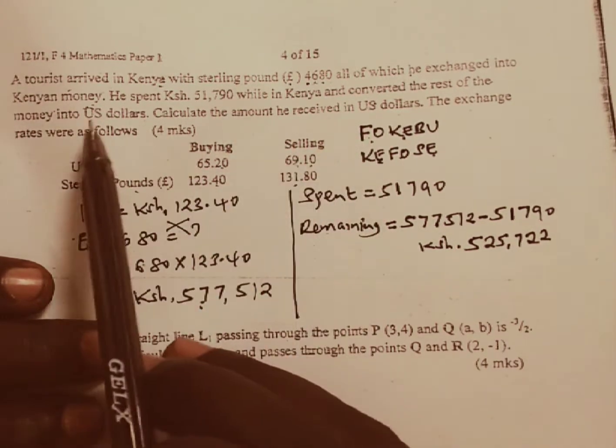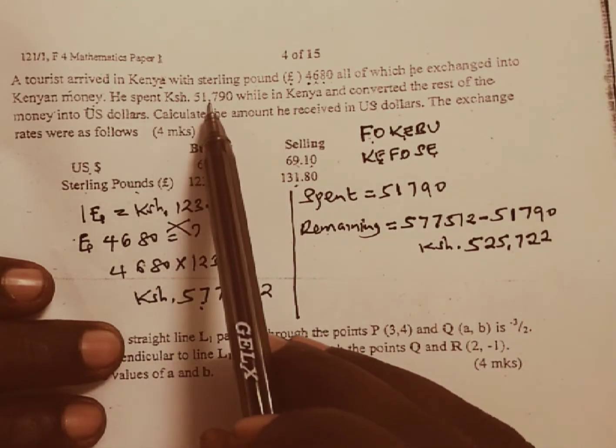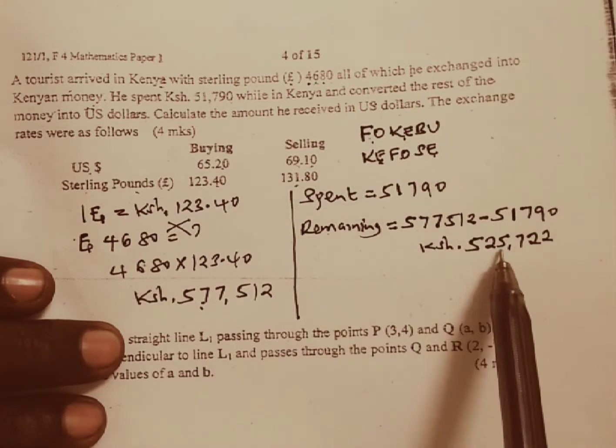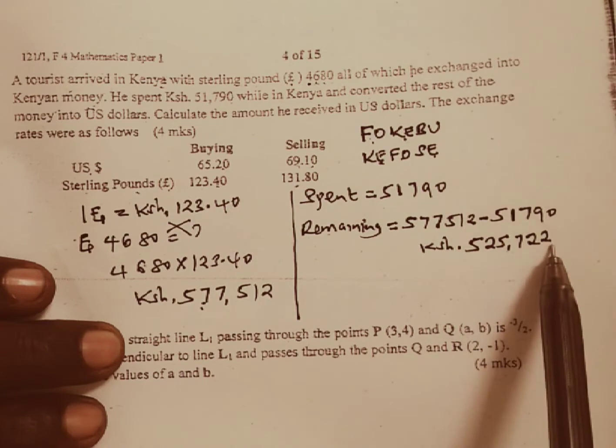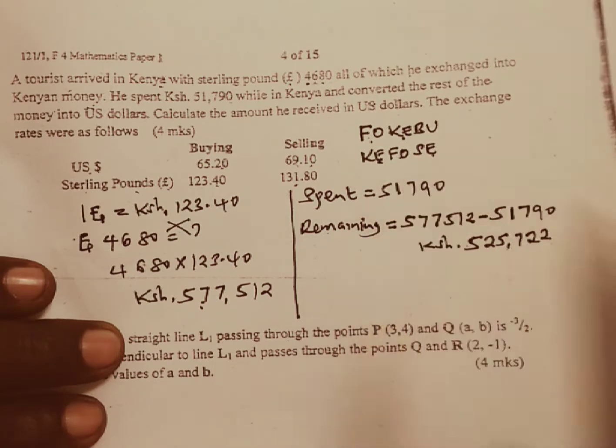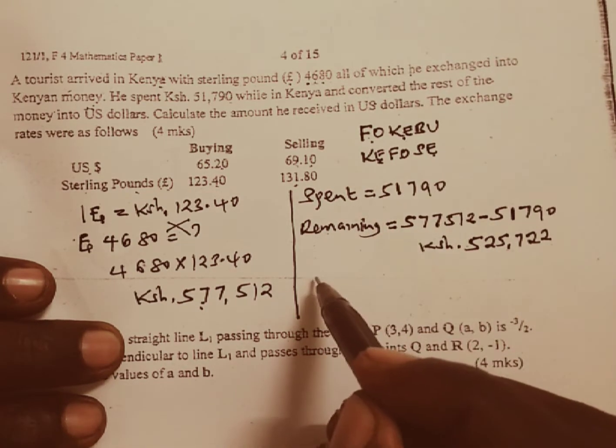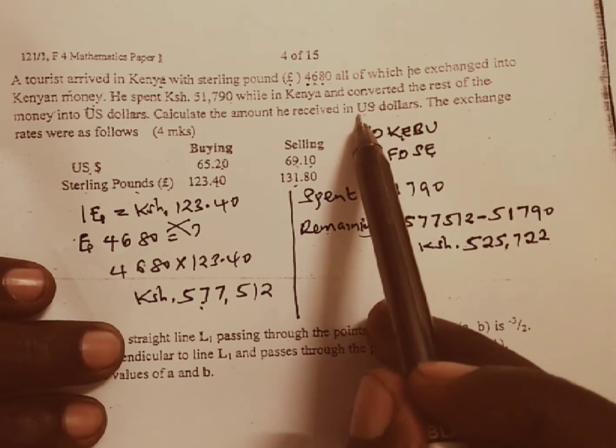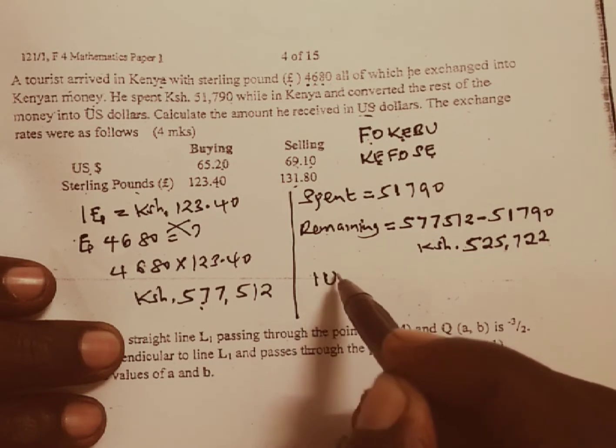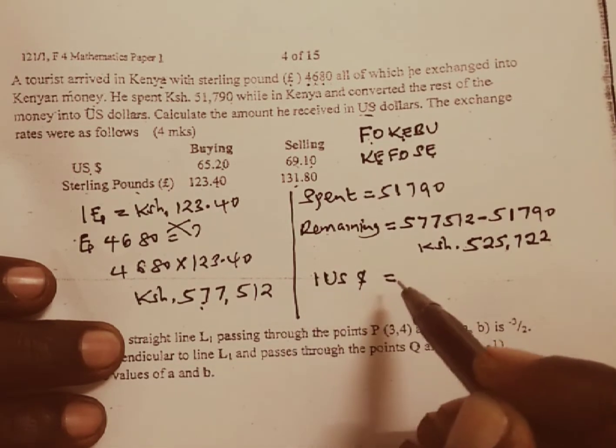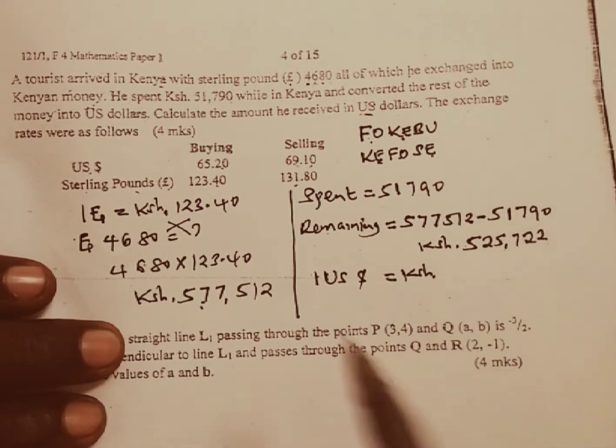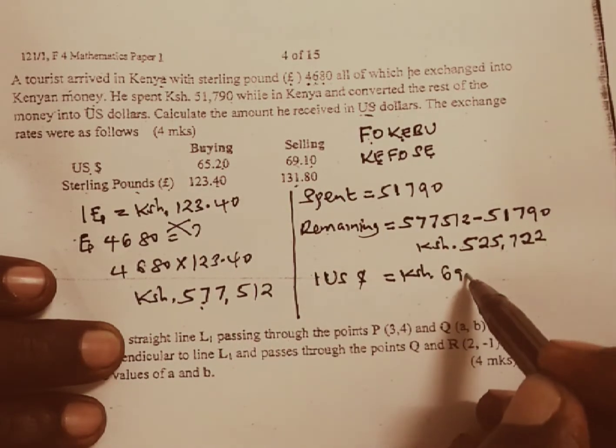So we continue. He spent 51,790 while in Kenya and converted the remainder, which is 525,722, into US dollars. This is now from Kenya to foreign. Kenya to foreign we use selling and we know in US they use dollars. So we are going to say one US dollar is equivalent to how much Kenya shilling selling is going to be equal to 69 shillings 10 cents.